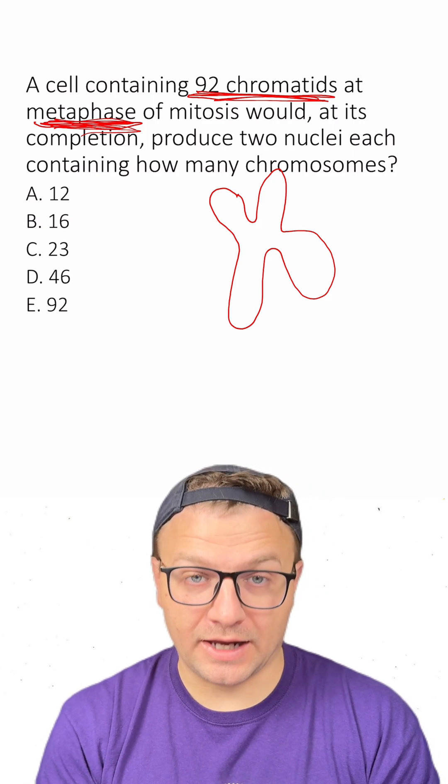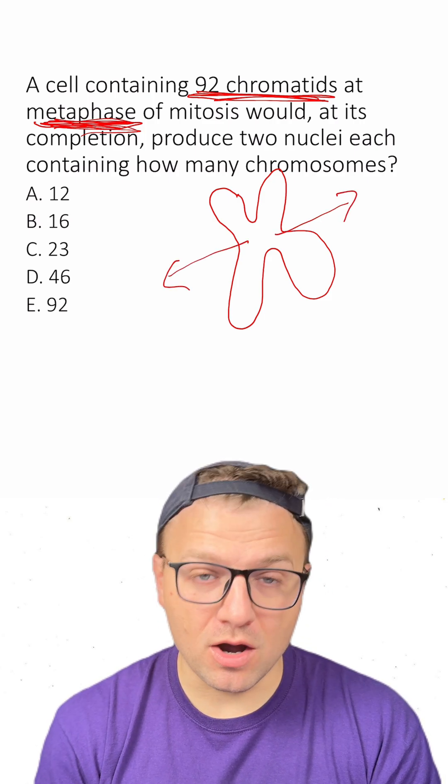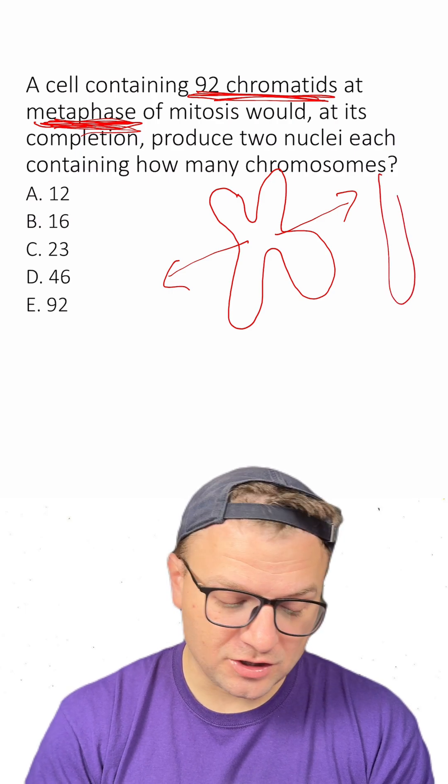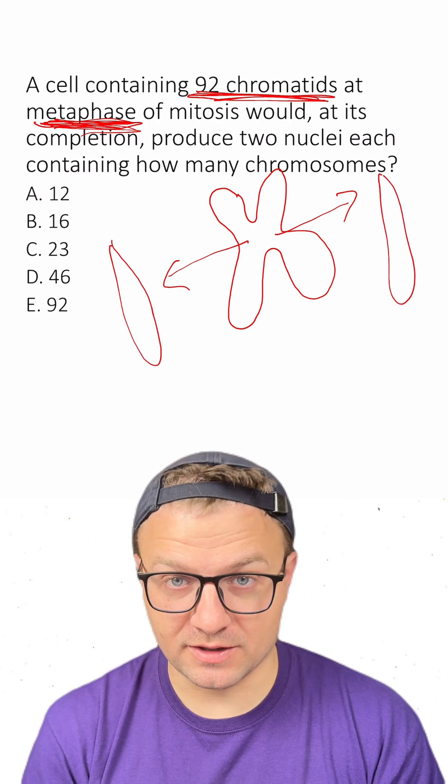After metaphase, during anaphase, the chromatids are going to split apart, and they are both going to be chromosomes, but now only containing one chromatid.